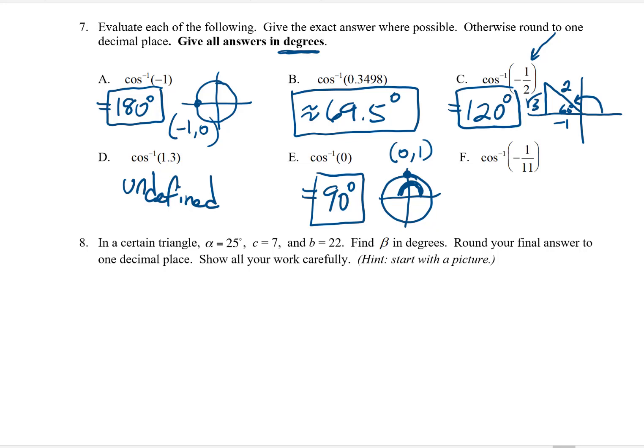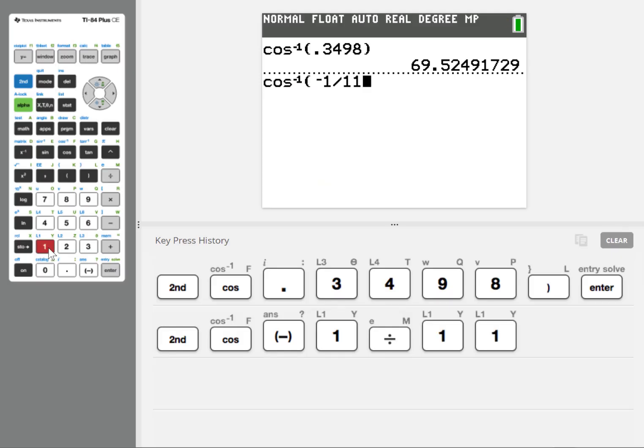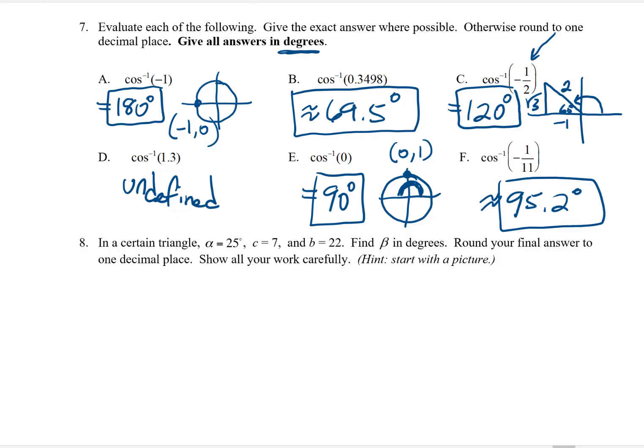and it looks like my answer is 69.5 degrees. And then letter F, cosine inverse of negative 1 over 11. We'll add that to the calculator, and that answer comes out to be 95.2 degrees. Both of those last two answers make sense. I had a positive ratio, so I ended up with a first quadrant angle in letter B. Here I had a negative ratio, and I ended up with a second quadrant angle in letter F.